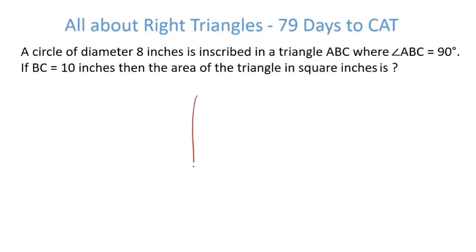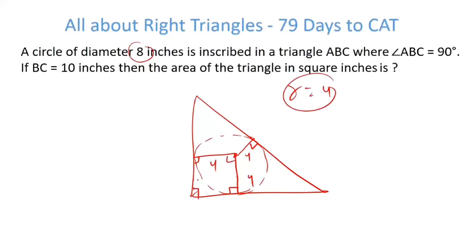Moving forward, a circle of diameter 8 inches is inscribed in a triangle ABC. Again, we are talking about incircle. So we know that the radius is going to be perpendicular to the sides. We have BC is equal to 10 and the diameter is 4, so radius small r is equal to 4. So this is 4, this is 4, this is 4. So here we have a square. So this becomes 4, this becomes 4. So this is BC and this is A. Now this is 4, so this is 6.